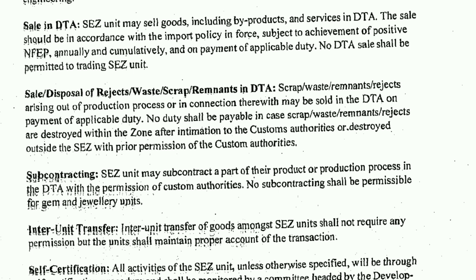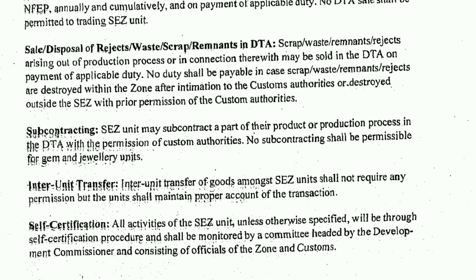Regarding subcontracting: SEZ units may subcontract a part of their product or production process in the DTA with the permission of the customs authority. However, no subcontracting shall be permissible for gems and jewelry units.